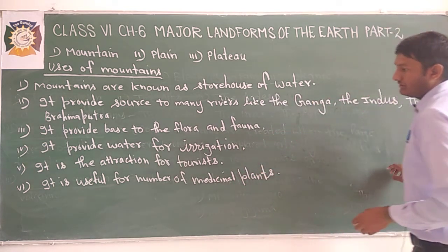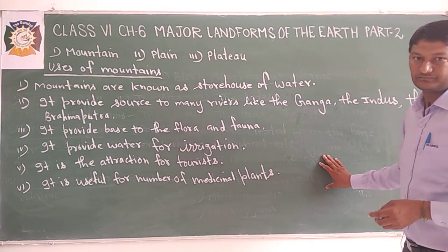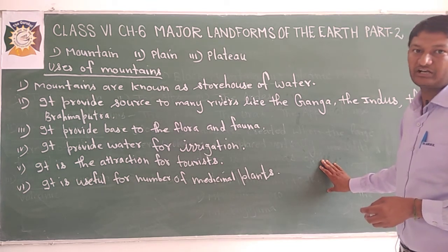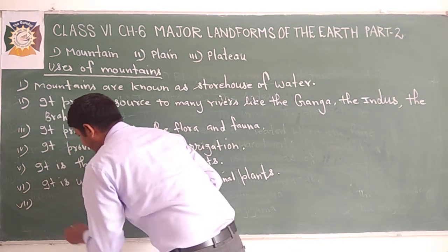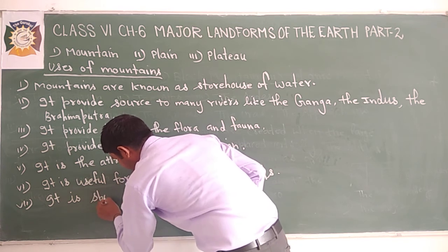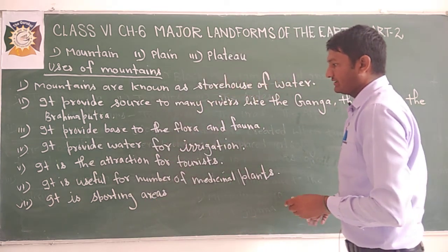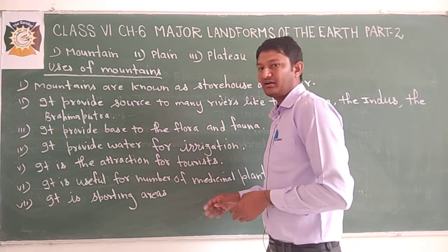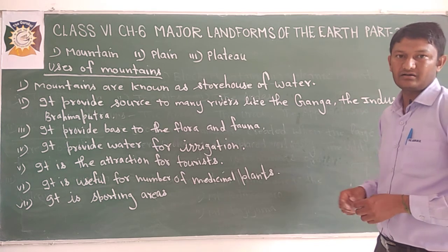A number of medicinal plants are found in the Himalayas — for example, Sarpagandha, Tulsi, Jamun, and Kachnar. These medicinal plants are very helpful for us. Mountains also provide recreational activities and sports like paragliding, hang gliding, skiing, skating, and river rafting.